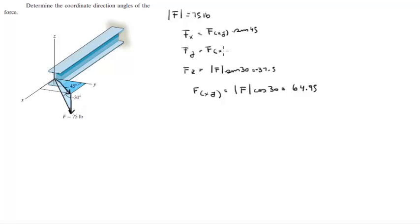And the Y is given by the projection times the cosine of 45. But they're both the same because sine of 45 and cosine of 45 are the exact same thing, and they come out to be 45.93, both positive.